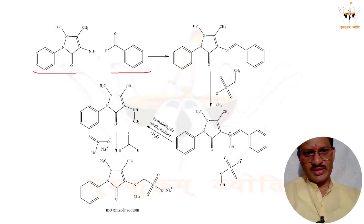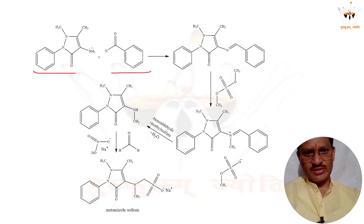In the next step, benzaldehyde is involved. The NH2 group undergoes a nucleophilic addition reaction — the nucleophilic NH2 attacks the carbonyl carbon of benzaldehyde. Finally, the product undergoes reaction with methyl sulfoxide, and the C3 group is introduced at the nitrogen.